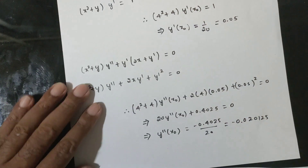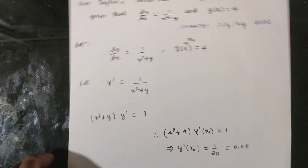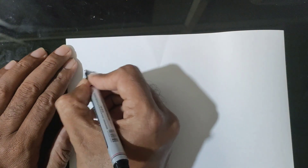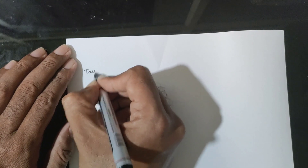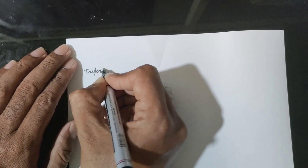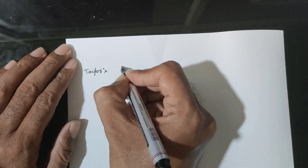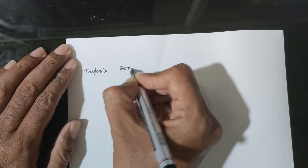Therefore the Taylor series value gives y double-dash of x₀ equal to 0.4025. This result is used in the Taylor series expansion.